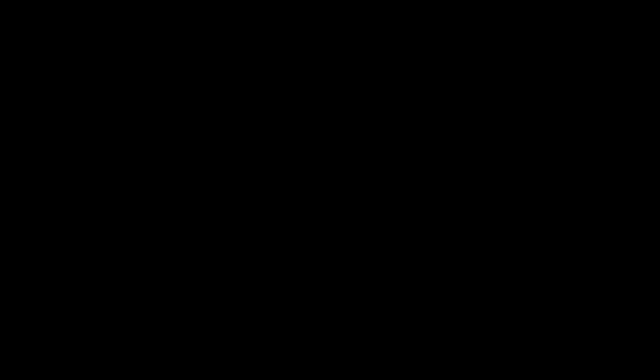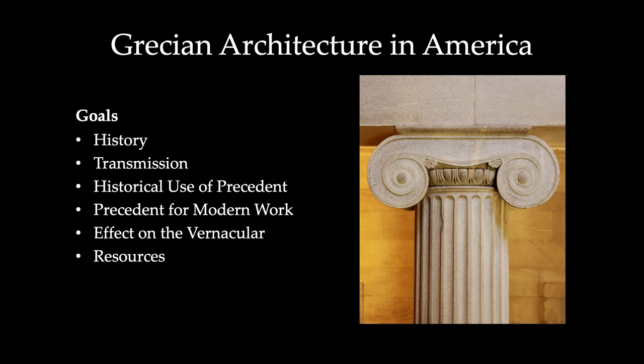From here, I'd like to start with a list of objectives for the course. These are: to understand the basics of the development of the Grecian movement in the United States; to become familiar with the various modes of transmission that allowed the Grecian movement to be prevalent across the country; to understand how historic precedent was utilized and adapted during this movement for new uses and to further develop existing traditions and building types; to gain an understanding of useful precedent in both forms and details that can be utilized and adapted in new designs today; to learn about regional variations and how Grecian architecture altered vernacular forms; and lastly, to be familiar with historical and modern resources to utilize as design references and further research.